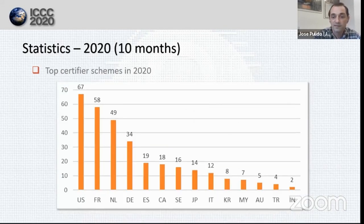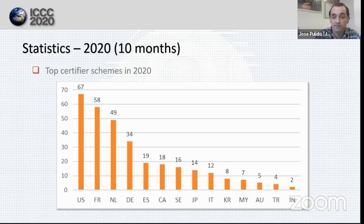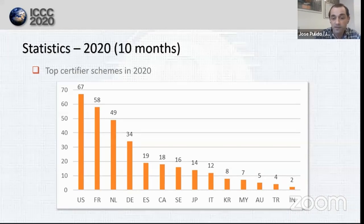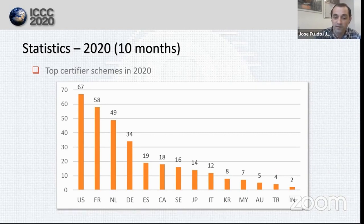One of the most valuable statistics we have been able to collect is the ranking of certifications per scheme during this year. The numbers indicate that the United States is the winner of 2020 so far with 67 certifications, followed by France in second position with 85. The usual top three involves France, United States, and Germany, but this year Netherlands escalated straight to third position with 49 certifications. Germany is in fourth place with more than 30 certifications, and with between 10 and 20 we find Spain, Canada, Sweden, and Italy. With less than 10 we find Korea, Malaysia, Australia, Turkey, and Singapore.